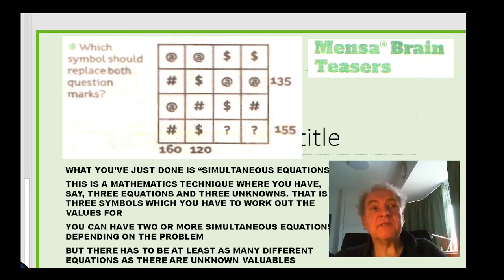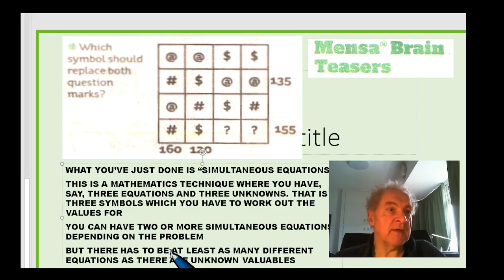Right, so what you've just done is simultaneous equations. So you start off with three equations, you have three unknowns, the at, the hash, and the dollar symbols. And then using the three equations, you're able to find out what the values of each of the symbols were. You can have two or more simultaneous equations, but if you want to be able to solve them, you have to have at least as many equations as you've got unknown variables.